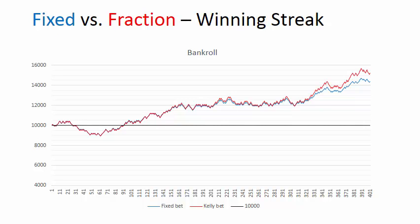Here we have the results of a gambling simulation — a fair coin flip game. This graph shows your bankroll over 400 flips of the coin. You start with a bankroll of $10,000. The blue line shows your bankroll betting a fixed amount of $100 per flip. The red line shows the results of betting a fraction of your bankroll — 1% — at all times. In this winning streak, betting a fraction worked considerably better because you're increasing your bet as your bankroll grows instead of betting a fixed amount.